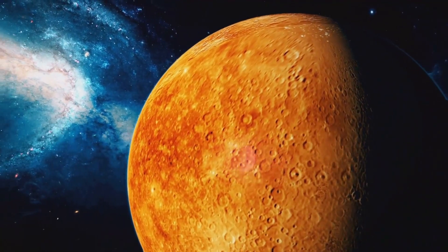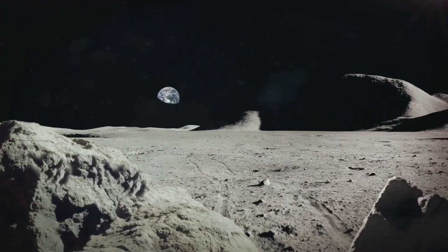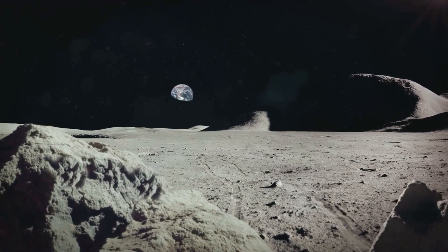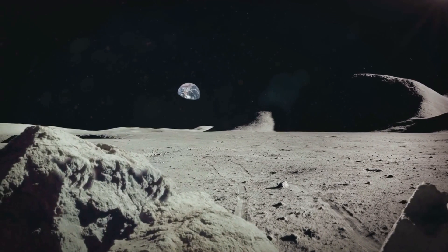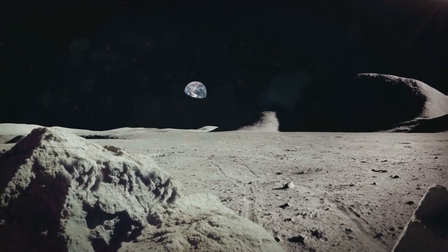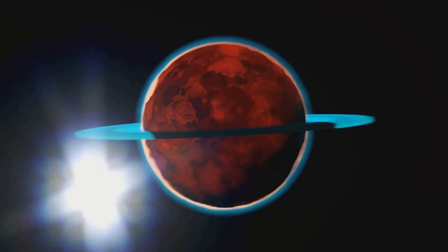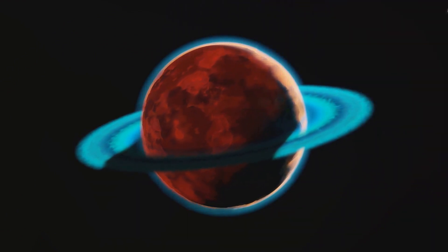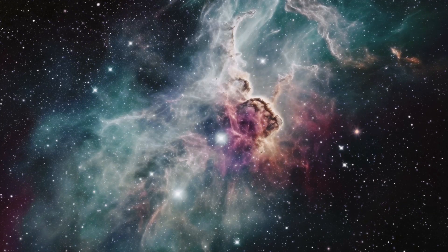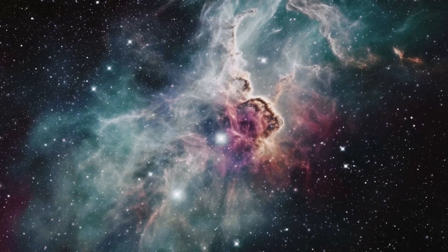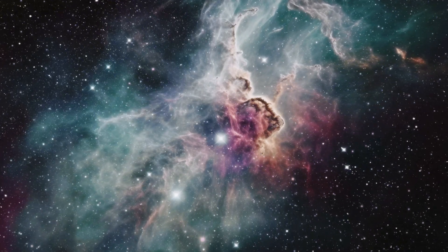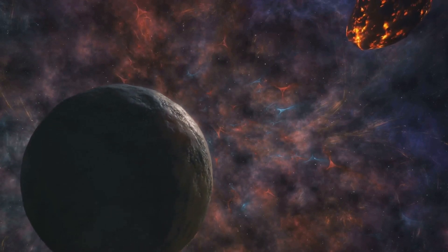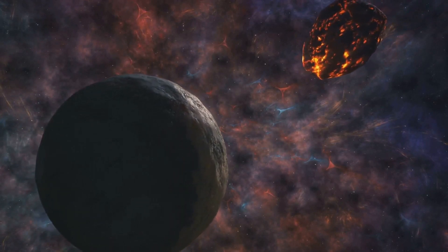And there you have it, 10 mind-blowing facts about Venus. We've journeyed through its mysterious atmosphere, experienced its scorching temperatures, and marveled at its slow and retrograde rotation. We've discovered that Venus, unlike Earth, has no moon. And we've walked its volcanic surface, bathed in its extraordinary brightness. We've felt the immense pressure of its surface and understood the power of its greenhouse effect. And finally, we've peered into its enigmatic clouds, leaving us with more questions than answers.